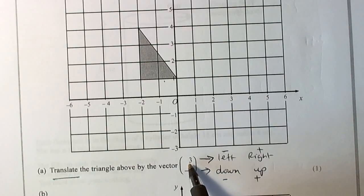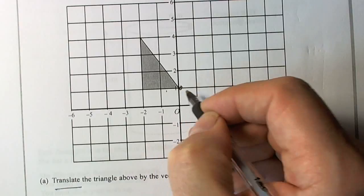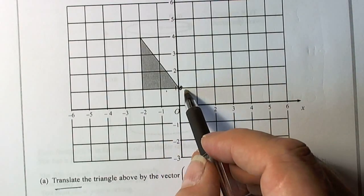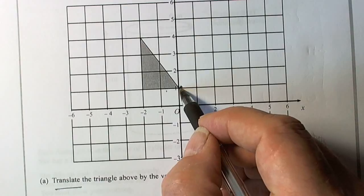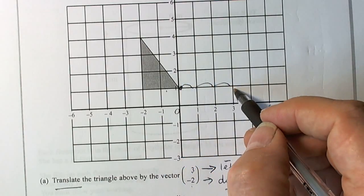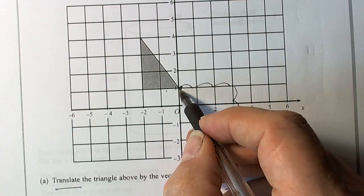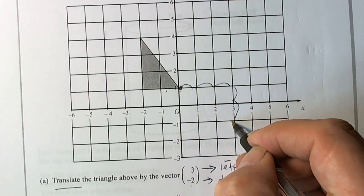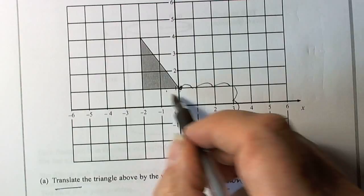So it's telling us to go 3 right and 2 down. We choose any point on the shape and follow that shape through the vector. So 3 to the right and 2 down. So that corner, that vertex, has gone to there.